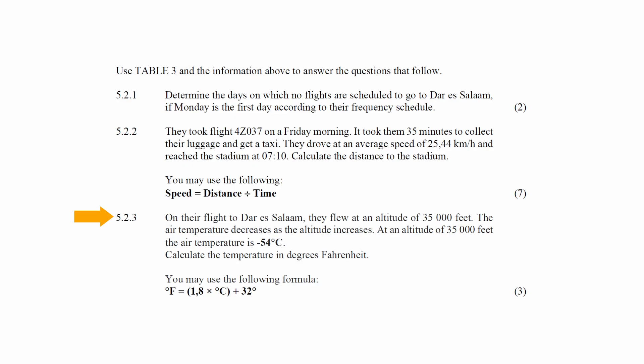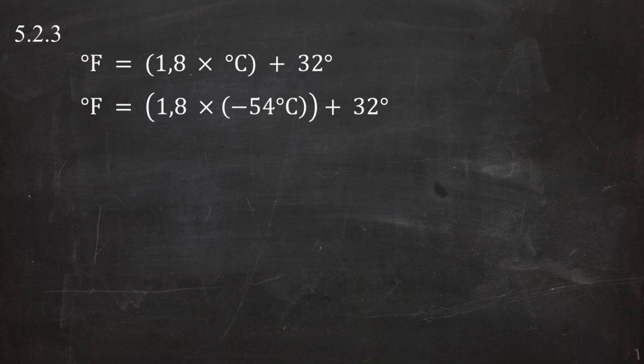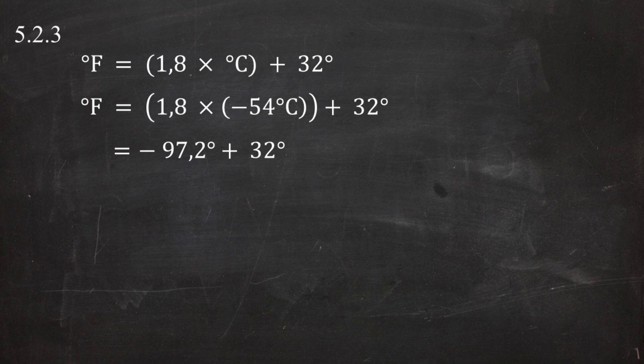In question 5.2.3, on the flight to Darul Islam they flew at an altitude of 35,000 feet. The air temperature decreases as altitude increases, and at 35,000 feet the air temperature is minus 54 degrees Celsius. Using the formula: degrees Fahrenheit equals 1.8 multiplied by degrees Celsius plus 32, substituting minus 54 gives minus 97.2 plus 32, resulting in minus 65.2 degrees Fahrenheit.